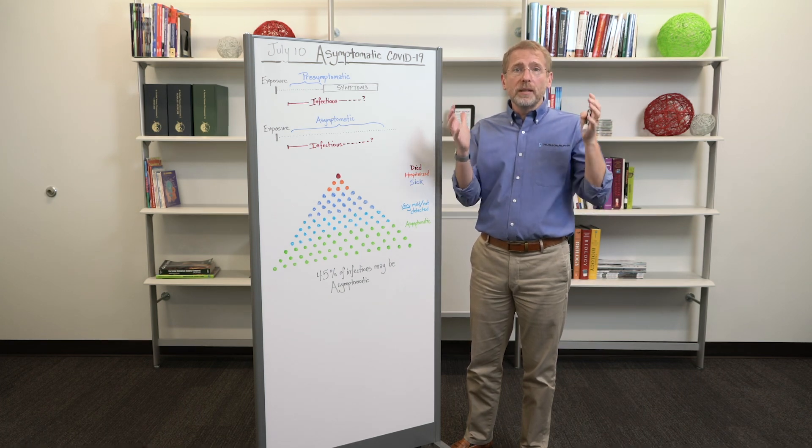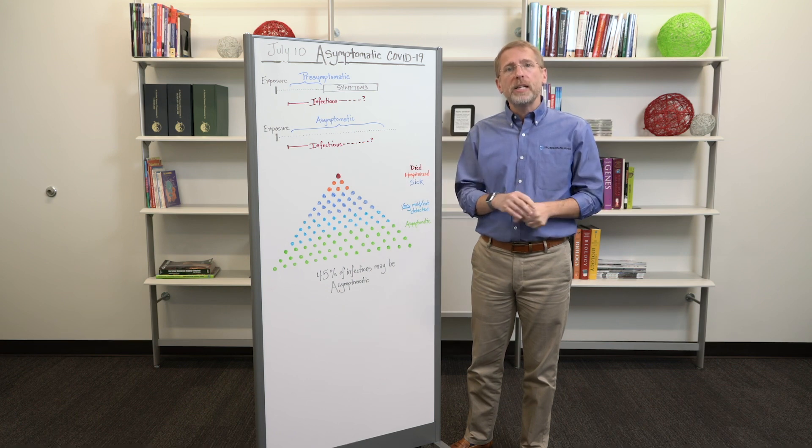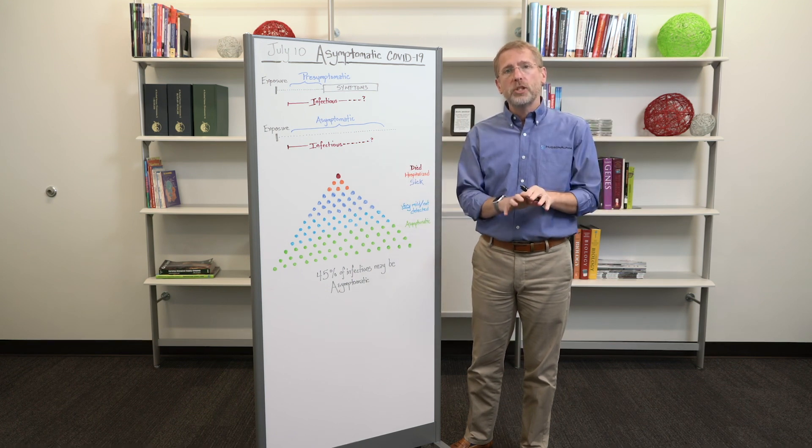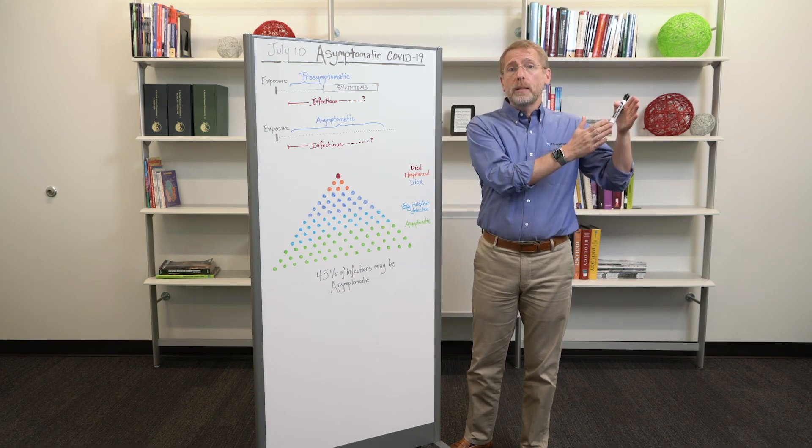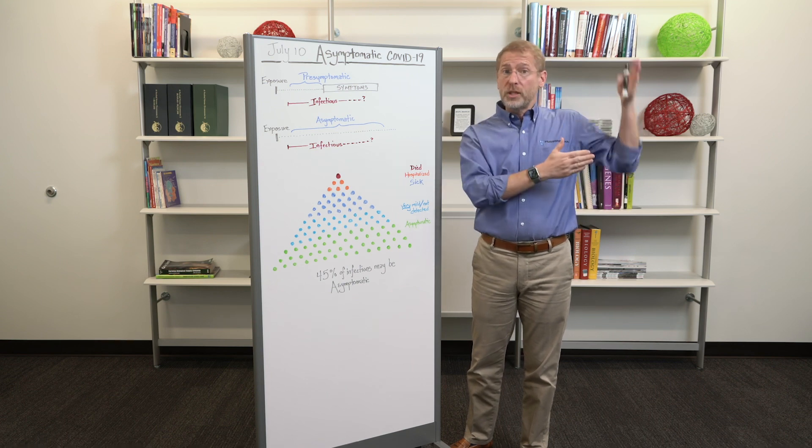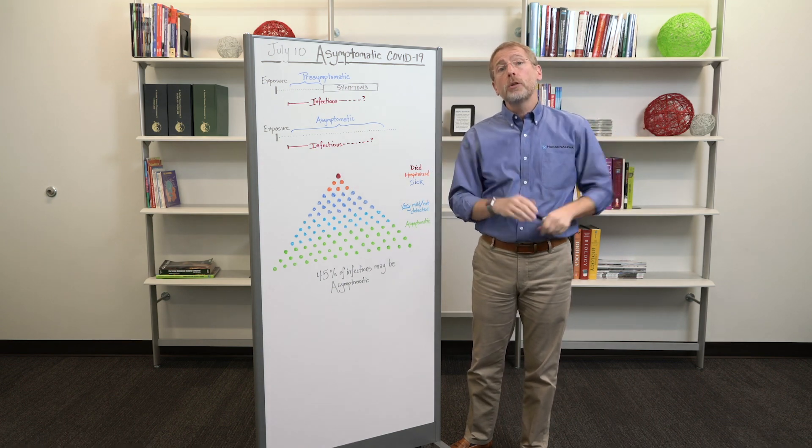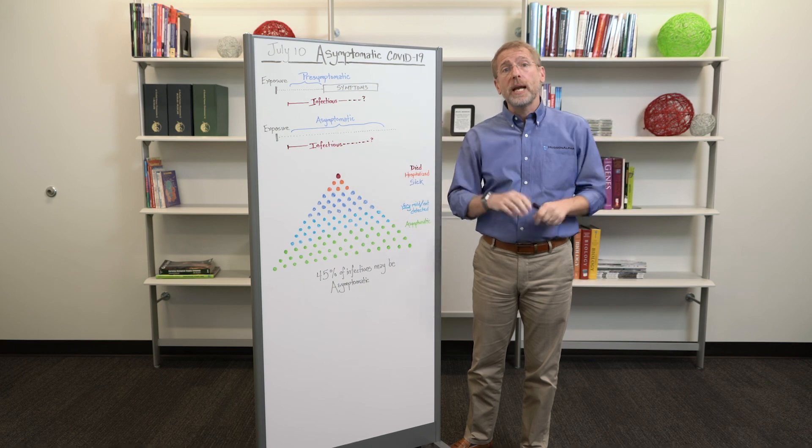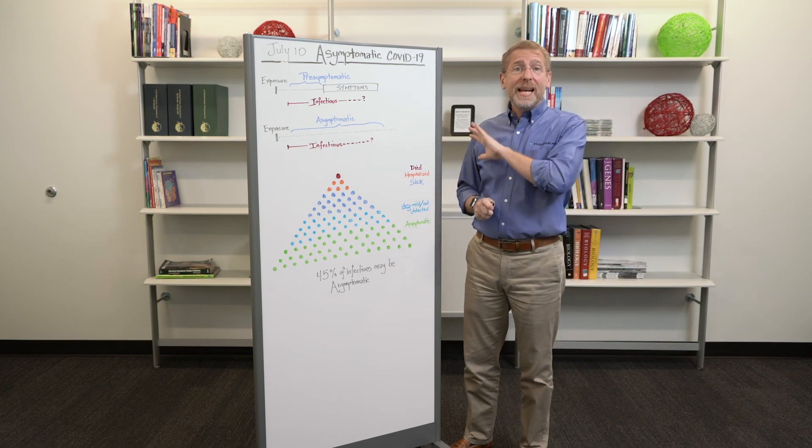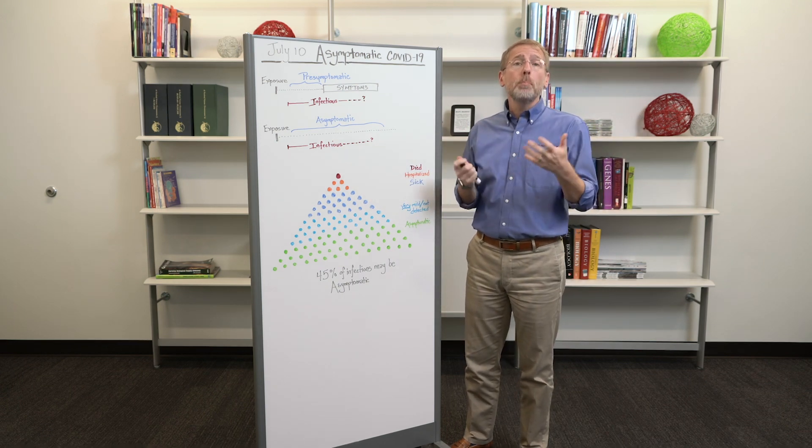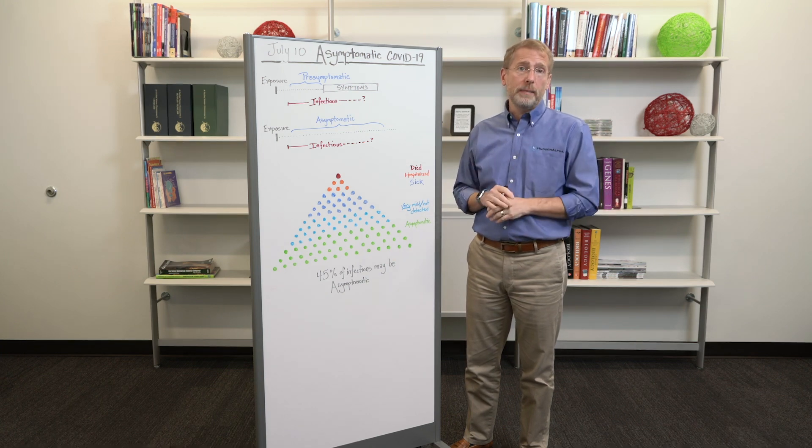There are not a lot of really well-designed studies where you can look at an entire population and follow it pre-infection, pre-exposure, all the way through the resolution of symptoms and infection. So the data that we're going to talk about are imperfect at best, but they're what we got.